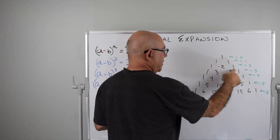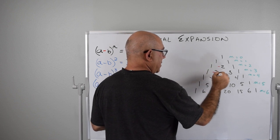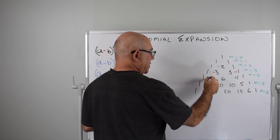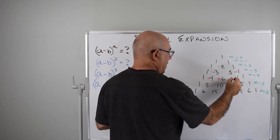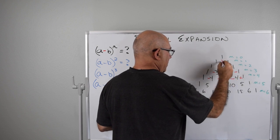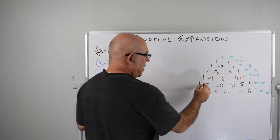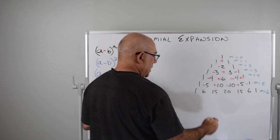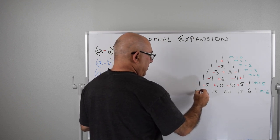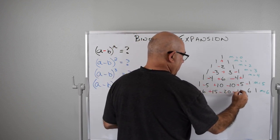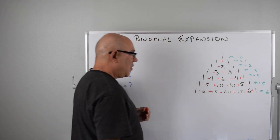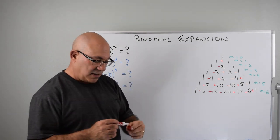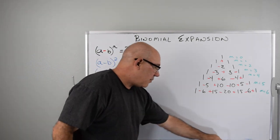We go: plus, minus, plus, plus, minus, plus, minus, plus, minus, minus, plus, minus, plus, minus, plus. Then for the next row: plus, minus, plus, minus, plus, minus, plus, minus. And the next: minus, plus, minus, plus, minus, plus, minus, plus. Nothing to memorize — just start on row two and put in alternating signs going down.